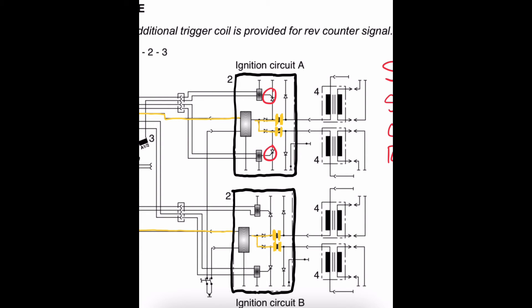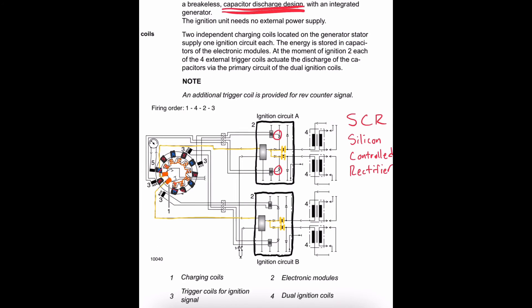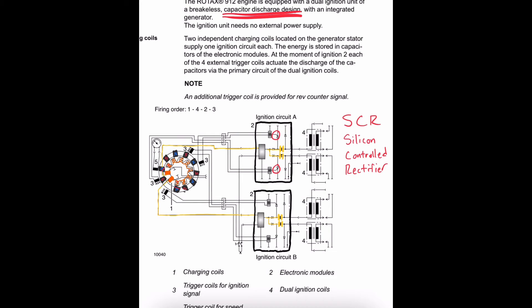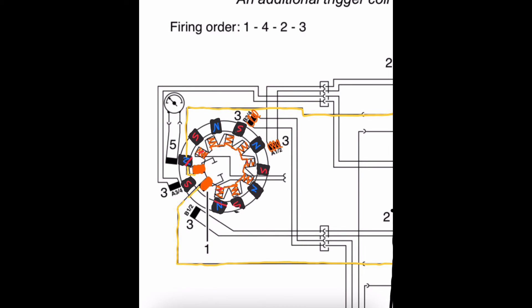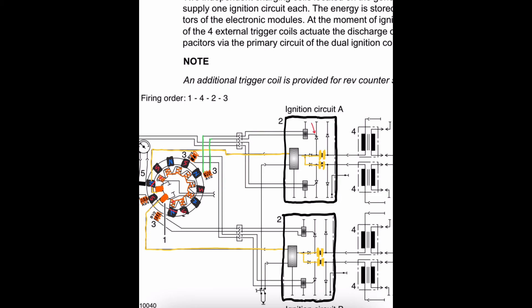And we won't get into the specifics of how the SCR operates. But we will point out that the SCR is responsible for discharging the electrical buildup inside the capacitor. We need to basically send an electrical current to the gate of the SCR in order to trigger the discharge in the capacitor. And we accomplish this through the use of trigger coils right here, which will trigger a pulse of magnetic flux when a spinning magnet aligns itself with the coil.